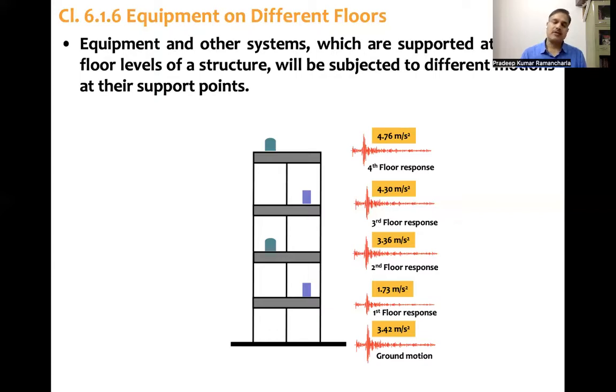You may observe the peak ground acceleration is 3.42 meters per second square, but the acceleration at different floor levels is quite different, increasing in the increasing order. It depends on how the mass is distributed vertically and in plan also. In this case, lumped mass idealization was used. Plan and stiffness distribution decides what will be the acceleration time history at different floor levels.